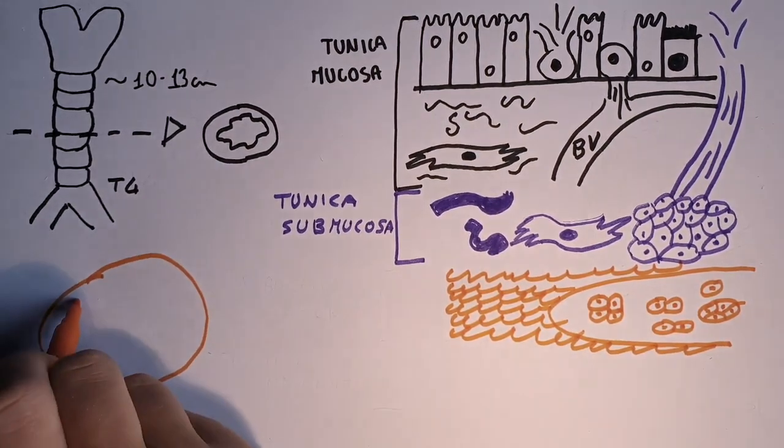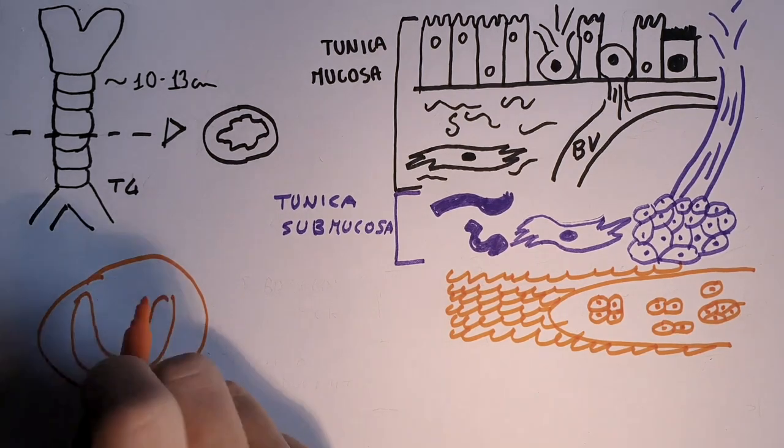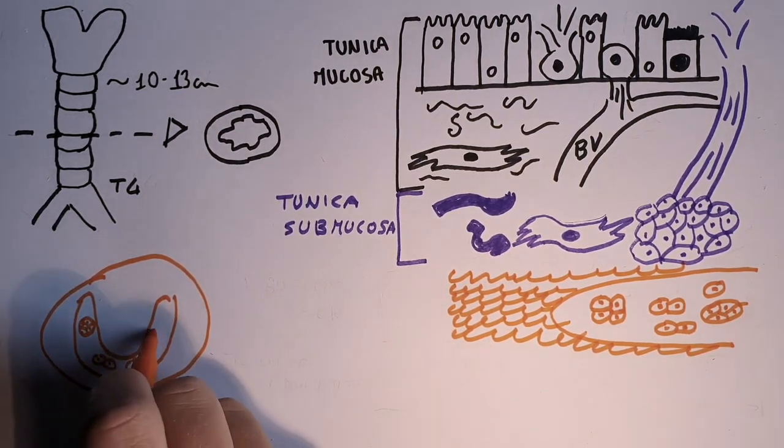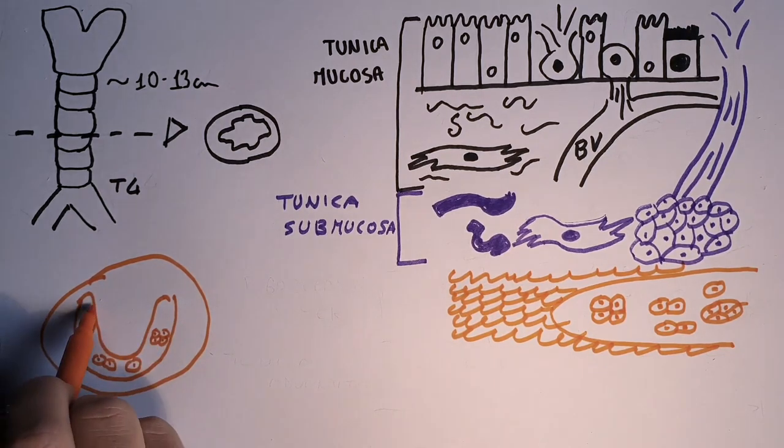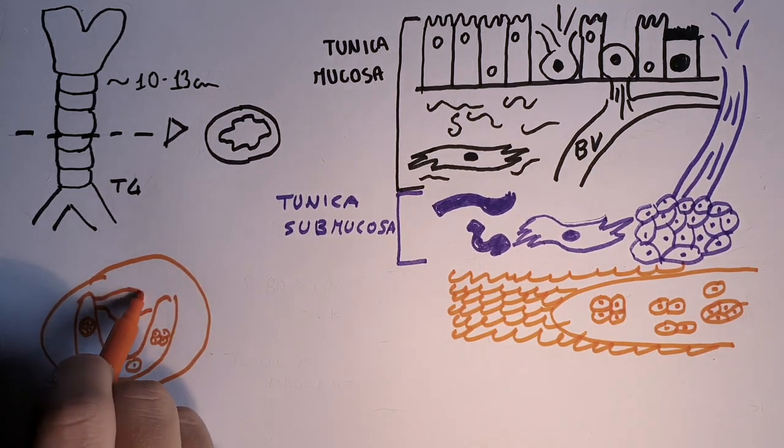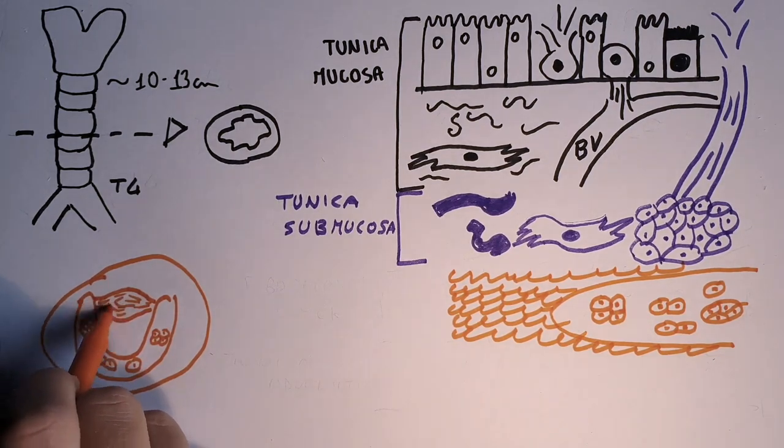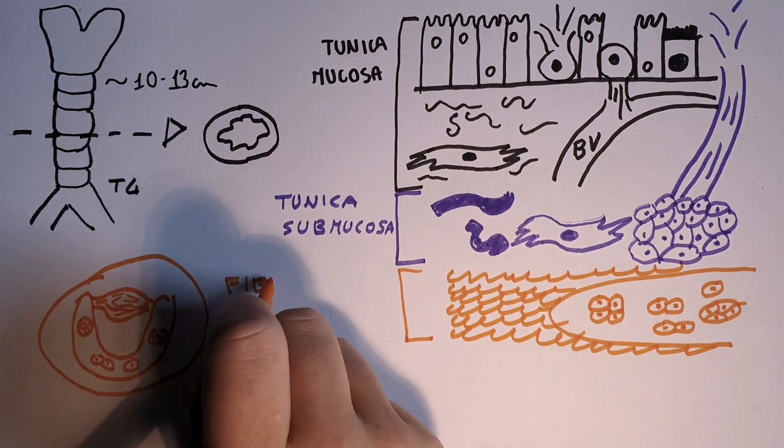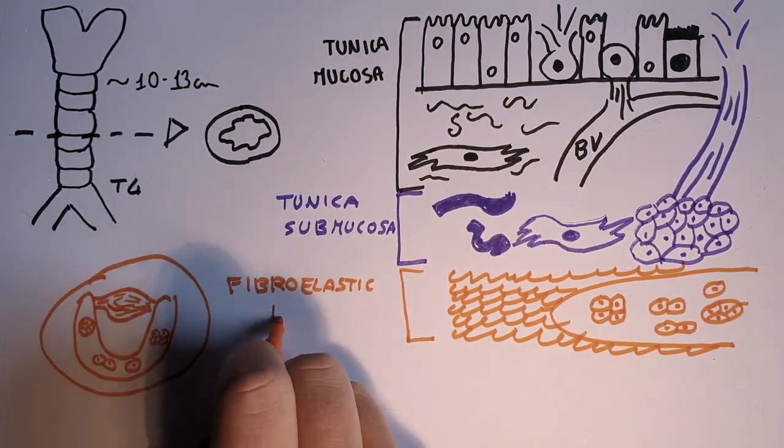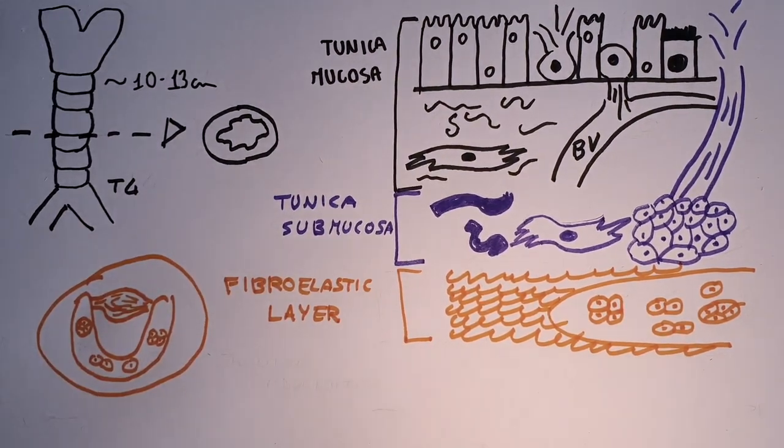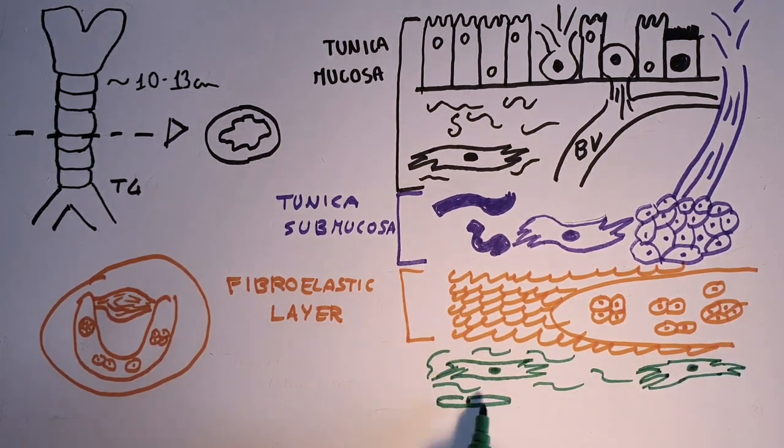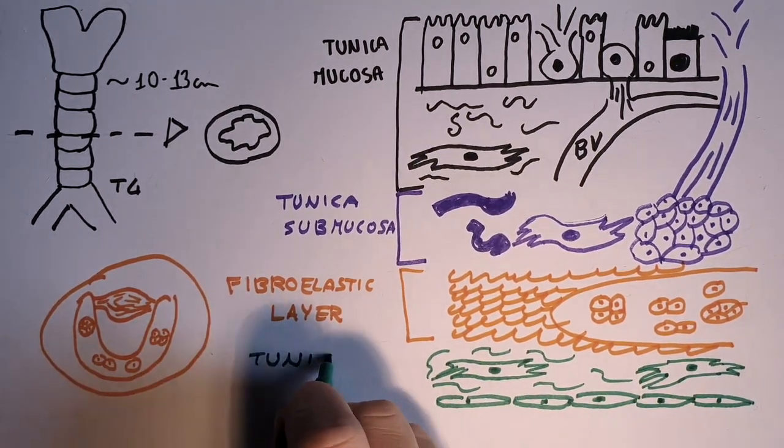Note that posteriorly there is no cartilage, but a thicker smooth muscle layer to support expansion and recoil during respiration and also to allow certain mobility during the passage of food into the esophagus. Finally, the trachea is not enveloped in a serosa but in a connective tissue capsule called tunica adventitia.